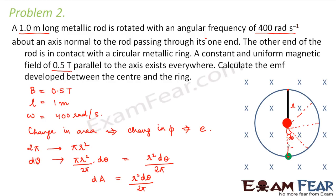Whenever we talk about EMF between two points, we need to consider a circuit. The circuit is completed only when we consider the rod. For example, if the rod is here, the circuit is formed by the rod, the arc, and the axis. When the rod comes to another position, the circuit changes accordingly. As the rod keeps moving, the area keeps changing.